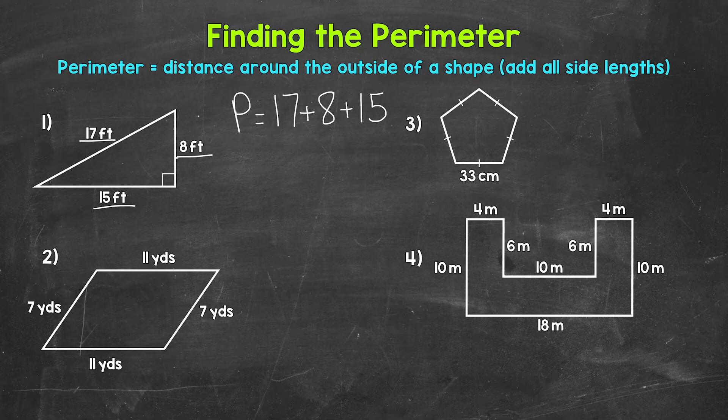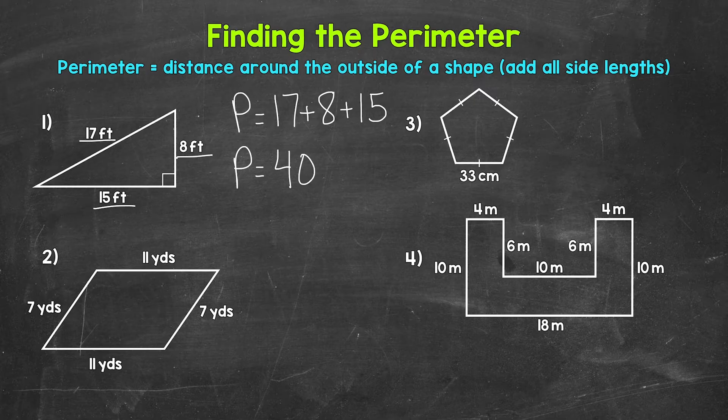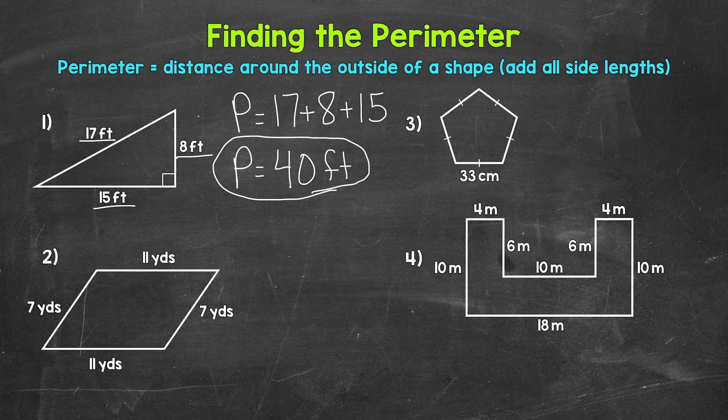17 plus 8 is 25, plus 15 gives us a perimeter of 40 feet. Now keep in mind, it does not matter what order we add the side lengths in. We're going to get the same perimeter however we do it. For example, if we do 15 plus 17 plus 8, we still get 40 feet for the perimeter for number one.